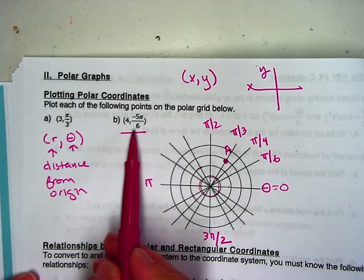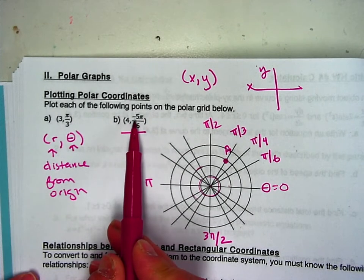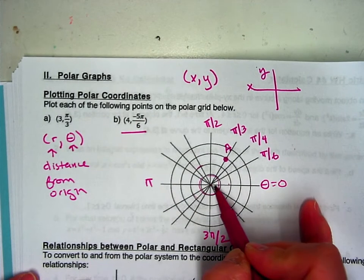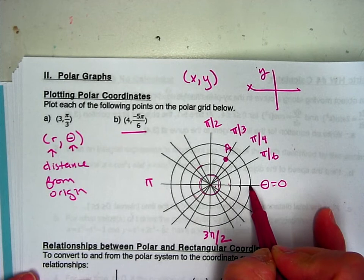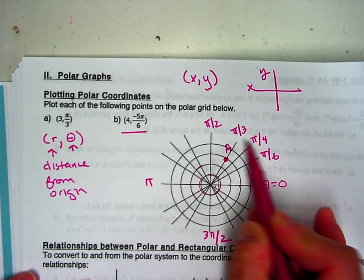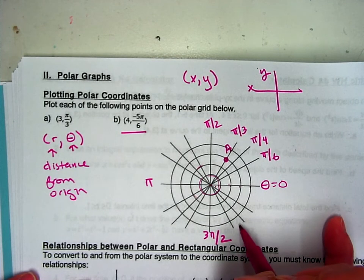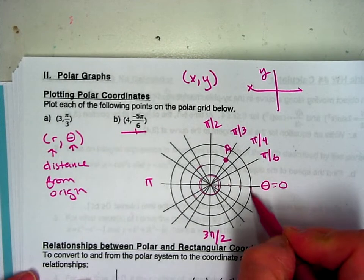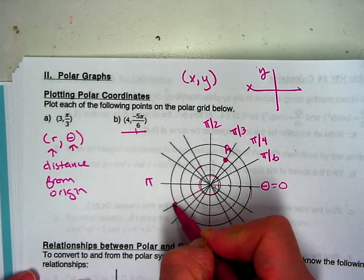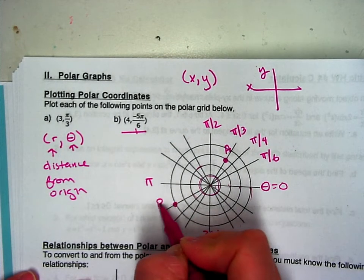Now point B, notice we can go in the opposite direction, so negative 5 pi over 6, so we're going to be 4 units out, there's my r, but instead of going this direction, we're going to go the opposite direction because your angle has a negative sign. So negative 5 pi over 6 would take you all the way over here, and this would be point B.